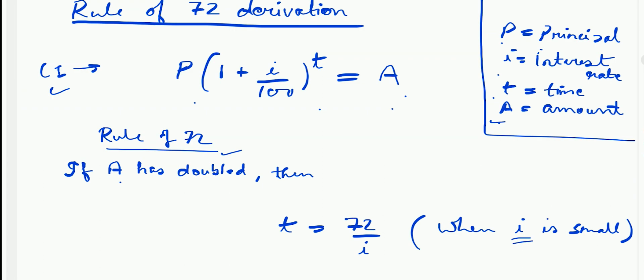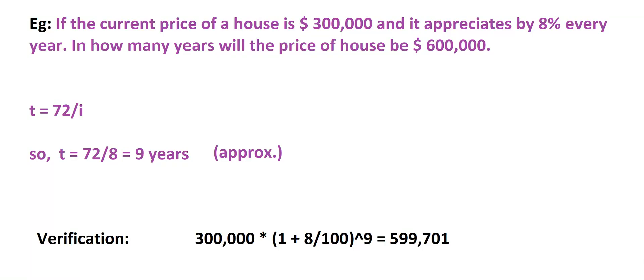Take this example: if the price of house appreciates by 8% every year, then time taken to double the price is given by 72 by i. Fitting the values, we get time equals 9 years. It is an approximate value, as seen in the verification here.